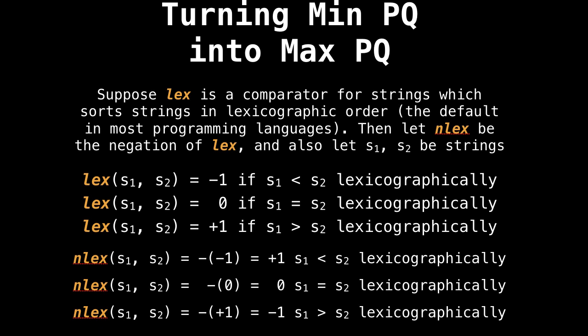Okay, now let's look at another example using strings. So suppose lex is a comparator for strings, which sorts strings in lexicographic order. This is the default for most programming languages. Then let's call nlex be the negation of lex. And also let's assign s1 and s2 to be some non-null strings. So below, you can see that our comparator assigns minus one if s1 is less than s2 lexicographically, zero if they're equal lexicographically, and plus one if s1 is greater than s2 lexicographically, and then nlex is just the negation of that.